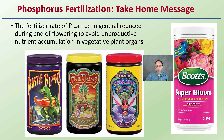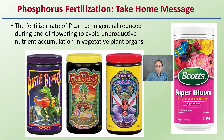Be mindful of the amount of phosphorus you're adding. The fertilizer rate for phosphorus can generally be reduced during the end of flowering to avoid unproductive nutrient accumulation in vegetative plant organs — especially if using high bloom fertilizers with 50 or 55% phosphorus. Plants don't need as much phosphorus as many growers have been led to believe, and this study continues to prove that. Cutting down on phosphorus fertilizer can reduce environmental contamination risk, reduce cost, and still maintain the same yields.